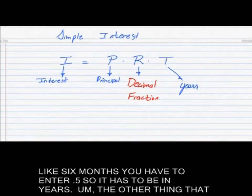Time is also a little tricky. Time is in years, and if we are talking about one, two years, that's fine, you just enter one, two. But if we are talking about less than a year, like six months, you have to enter 0.5. So it has to be in years.